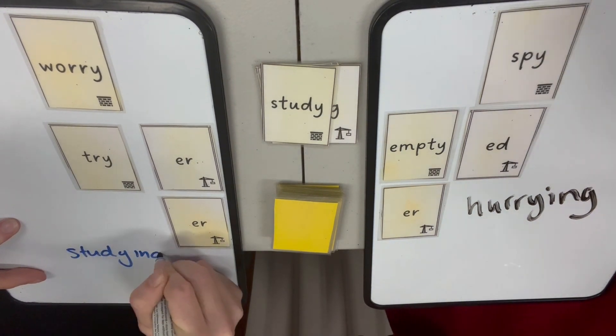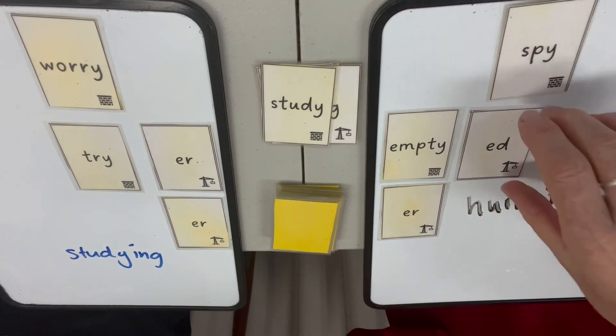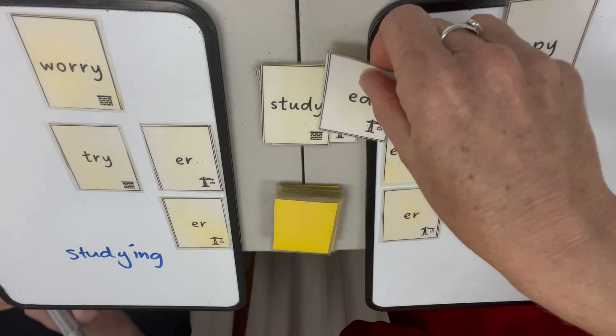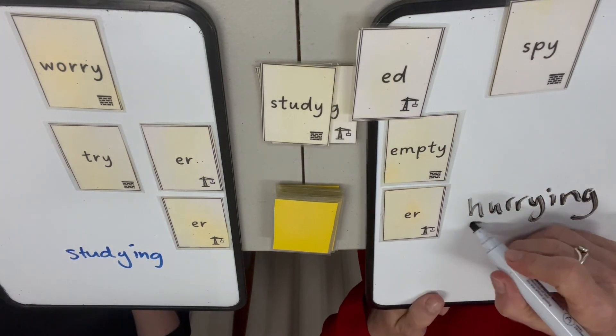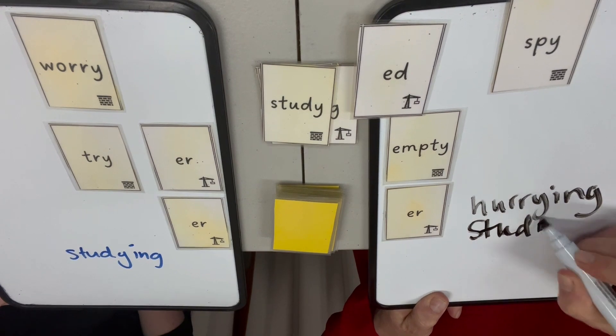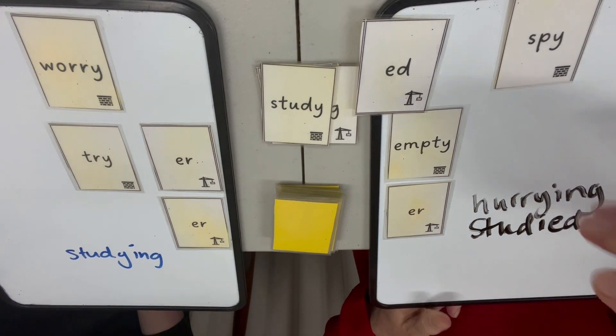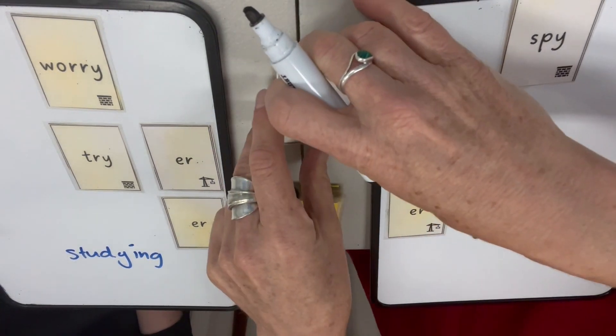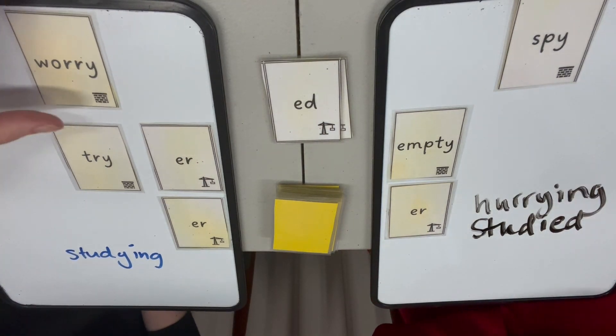Studying. Now I'm going to do studied. I studied a course. Studied and I'm going to change the Y into an I because it's a verb suffix. That's not studying an I.